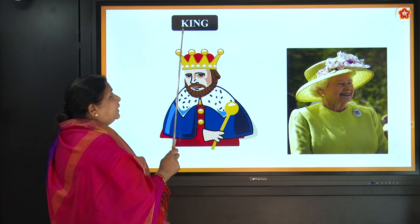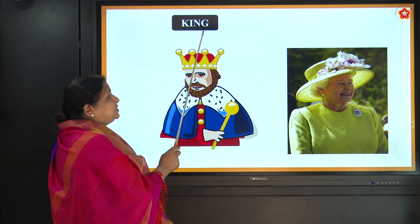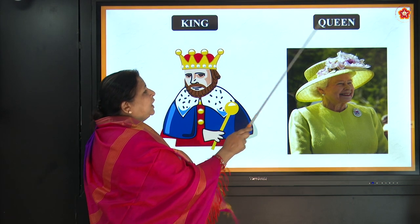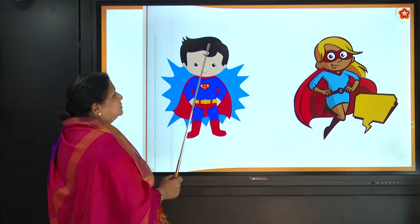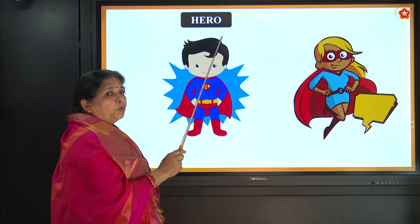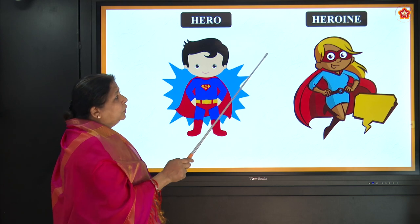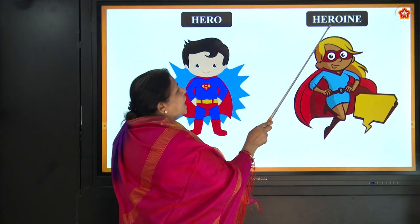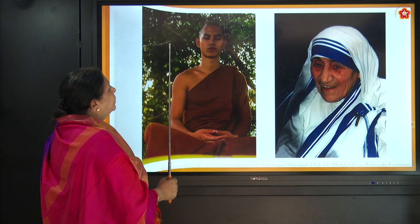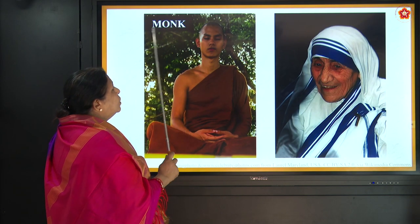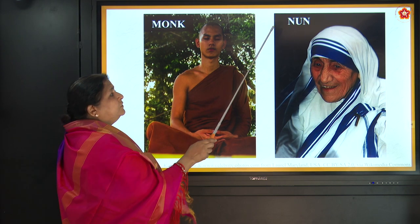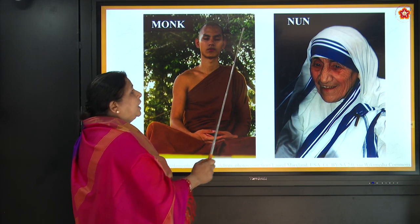Then we have king, K-I-N-G, and queen, Q-U-E-E-N. Hero, H-E-R-O, and heroine, H-E-R-O-I-N-E. Then we have monk, M-O-N-K, and nun, N-U-N.